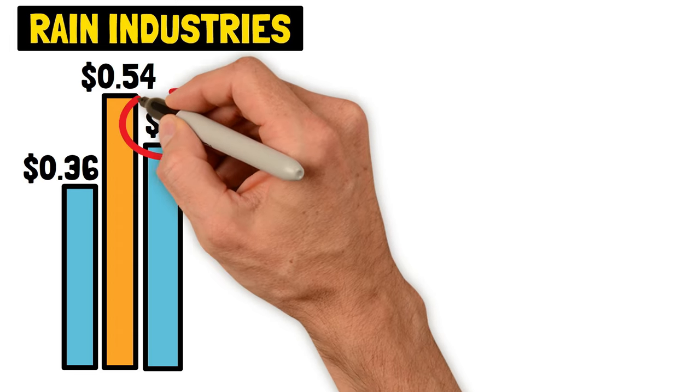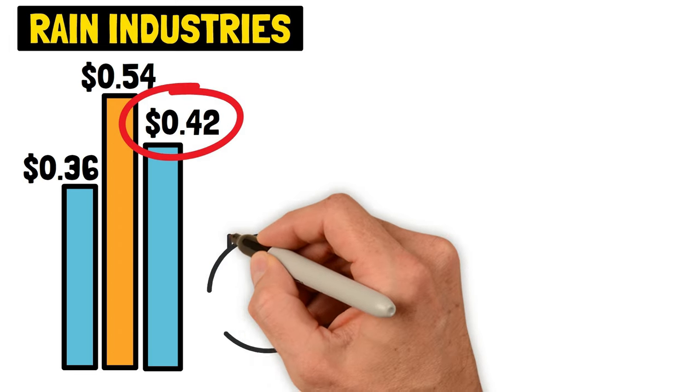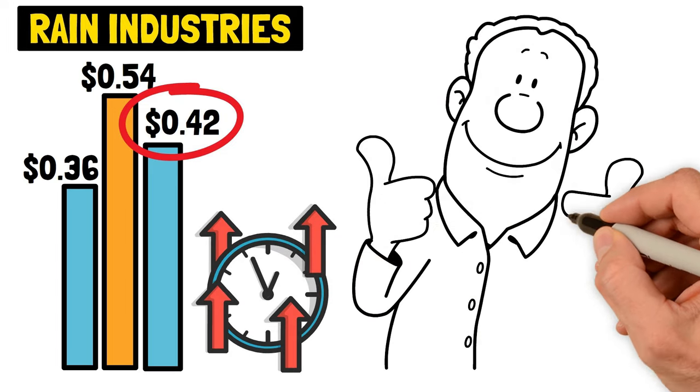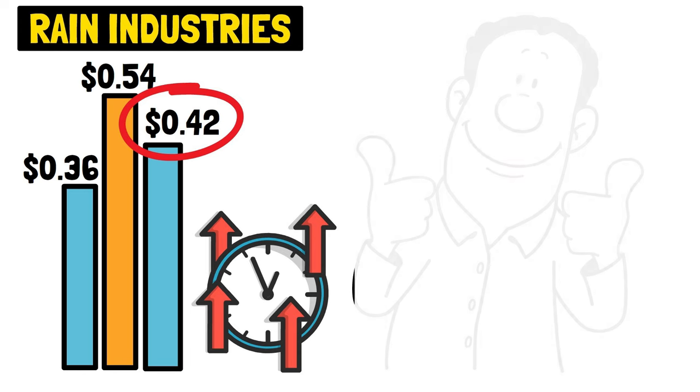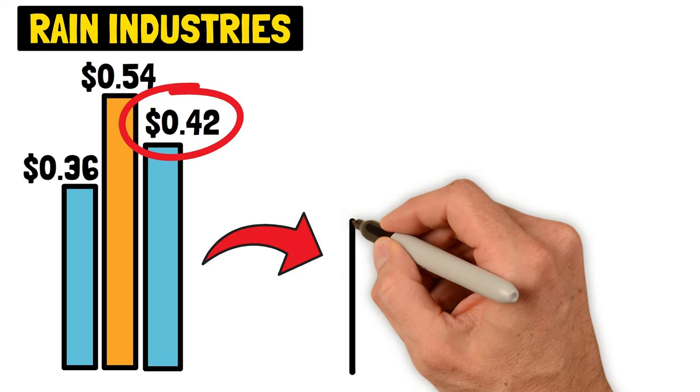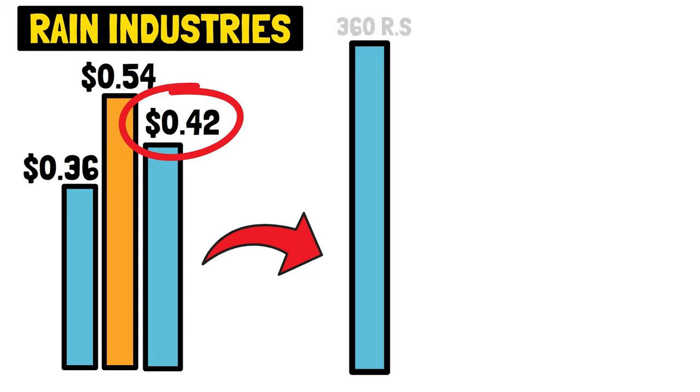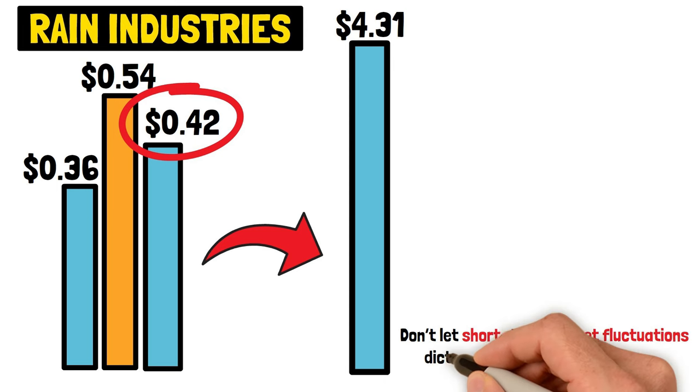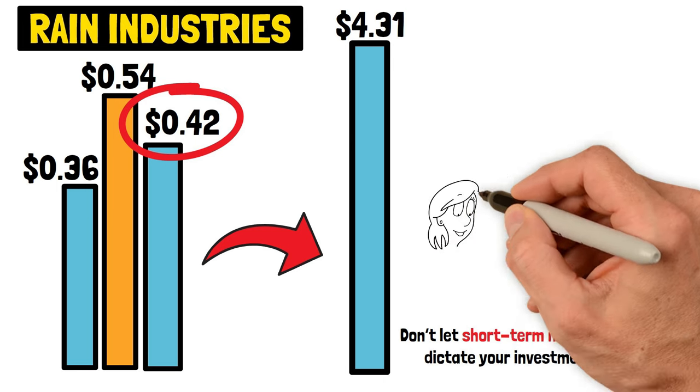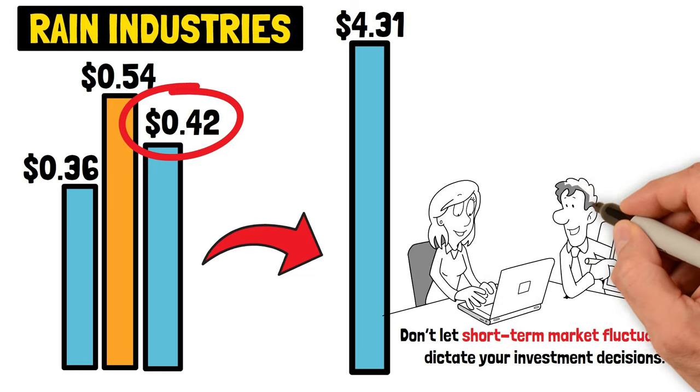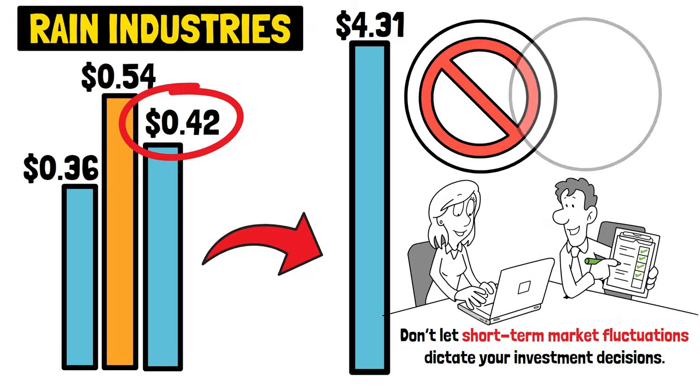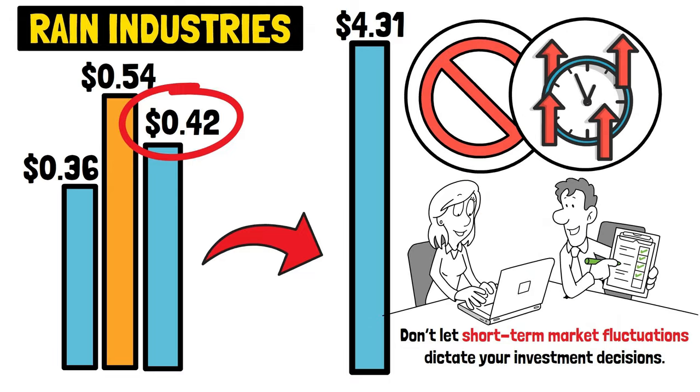But then it dropped back down to 35 rupees or 42 cents. If he had set a stop-loss, he would have sold it at a loss. Instead, he held on, believing in the company's long-term value and because he knew about the business. He understood the business, so he kept faith in his investment. Today, that stock is worth more than 360 rupees or 4 dollars 31 cents. So the takeaway here is clear. Don't let short-term market fluctuations dictate your investment decisions. If you're confident in your analysis and the stock is within your circle of competence, stick to your decision. Avoid using stop-loss orders as a crutch and trust your long-term perspective.